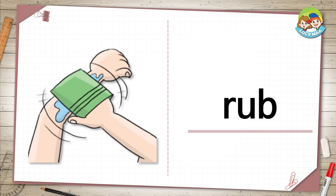Rub. In the picture, you see a green cloth going back and forth on the arm. The cloth rubs the arm. Can you rub your hands together?